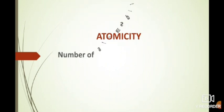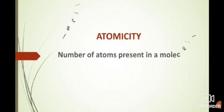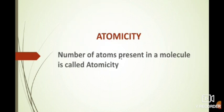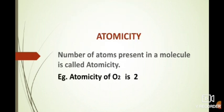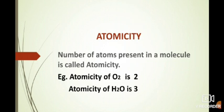Next we learn about atomicity. The definition of atomicity is: the number of atoms present in a molecule is known as atomicity. For example, the atomicity of oxygen O2 is 2 because it contains two oxygen atoms.